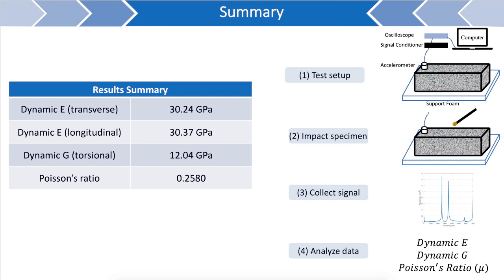To summarize this test: first, the specimen was set up and impacted in various locations to excite the fundamental transverse, longitudinal, and torsional modes. The signal from the impact was collected and analyzed to determine the peak frequencies, and those frequencies were then used to determine the dynamic modulus of elasticity, dynamic modulus of rigidity, and Poisson's ratio of the specimen. These values can then be used in various ways to evaluate the quality of the specimen. Thank you for watching this demo. If you would like more in-depth information on this test, please refer to ASTM C215.